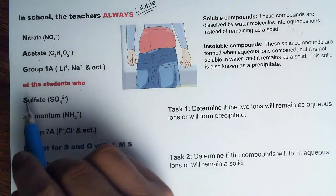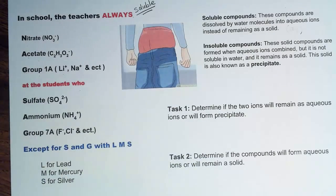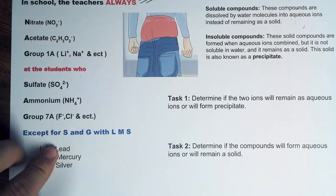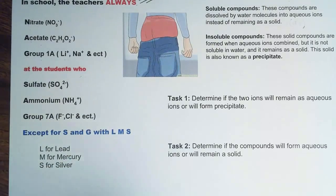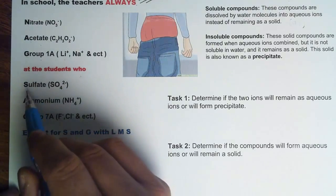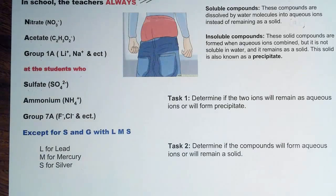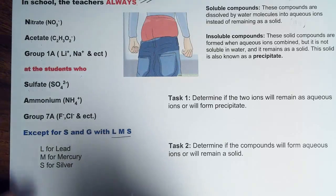Now for SAG — 'at the students who sag.' S is for sulfate: any compound with sulfate will always be soluble, except with the condition of LMS. A is for ammonium — any compound with ammonium will always be soluble. The second G is for Group 7A, the halogens.